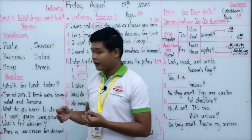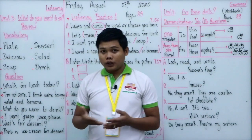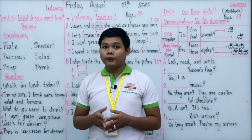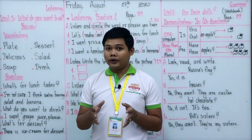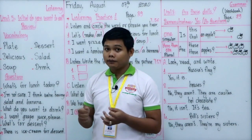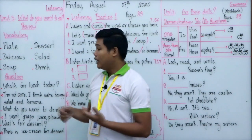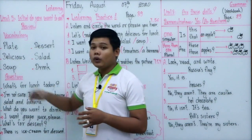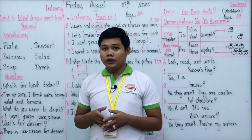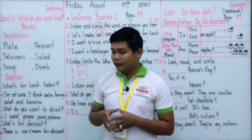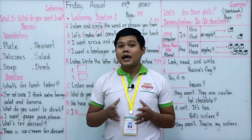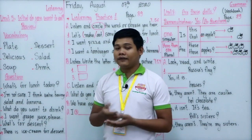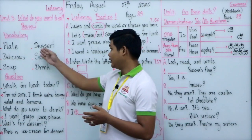Another vocabulary word is 'soup.' Soup is a kind of food with a liquid — they cook it, and most Asian people eat soup with rice. Next is 'dessert.' Dessert is a kind of sweet food that we eat after a meal.